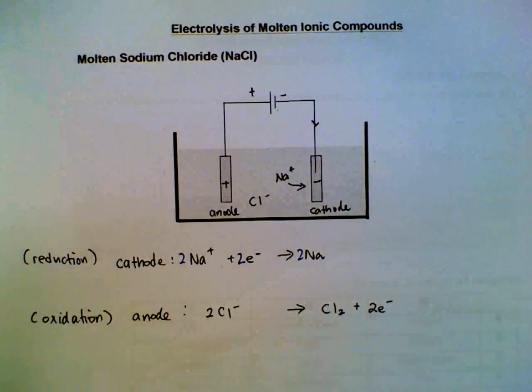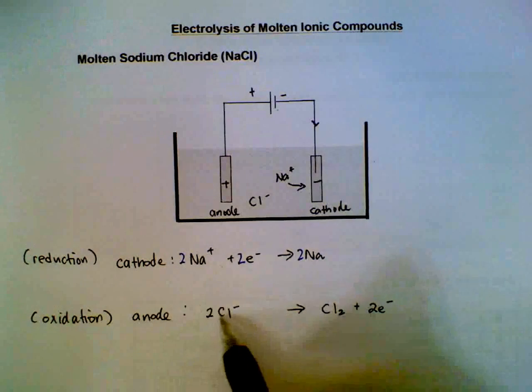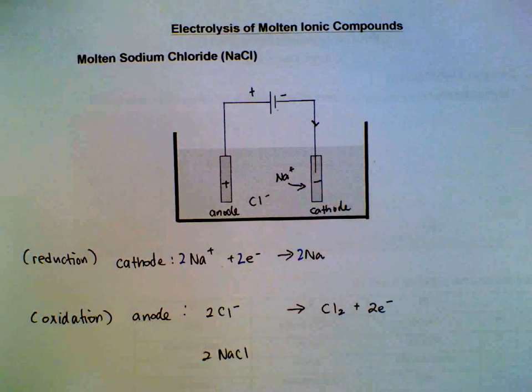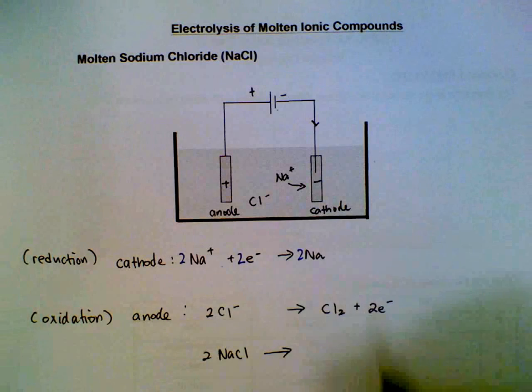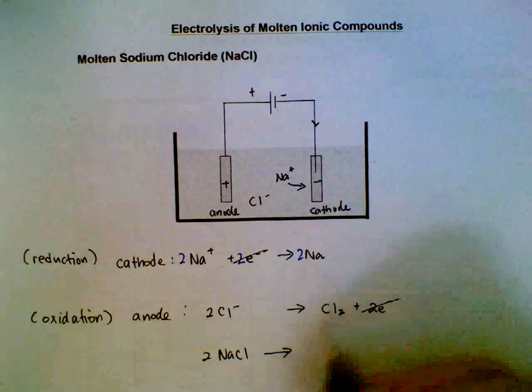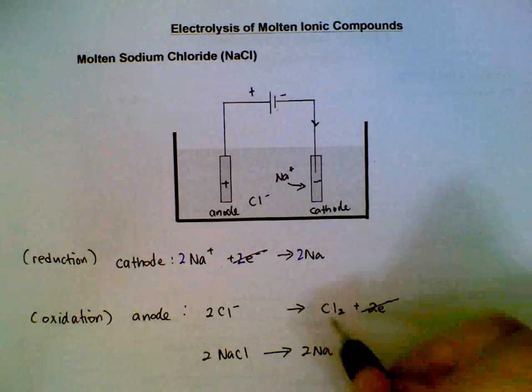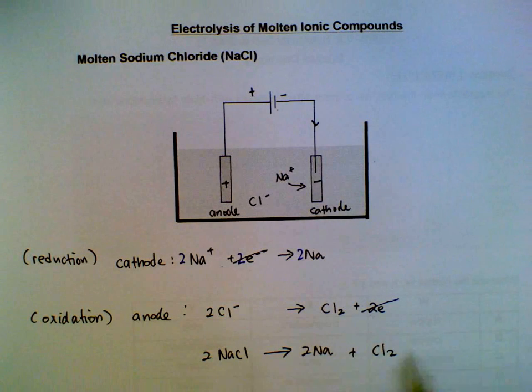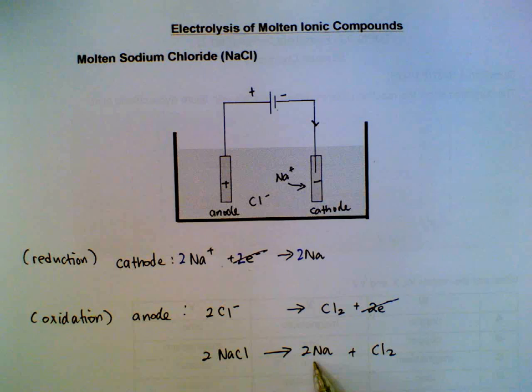We start with sodium chloride. The electrons will cancel out, which is why we make them the same number in the first place. On the product side we have two Na and one Cl2. So this is the overall equation. In other words, two moles of sodium chloride will give two moles of sodium and one mole of chlorine gas.